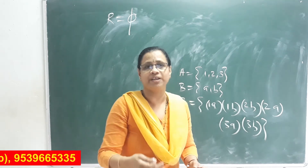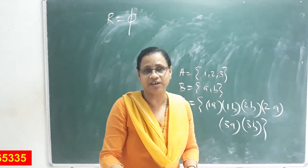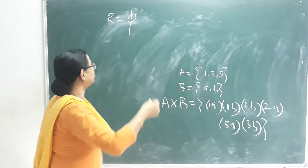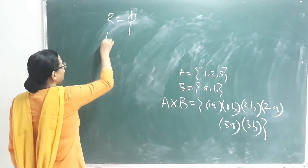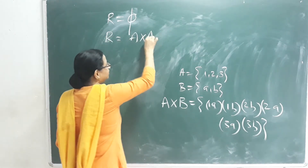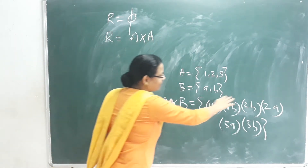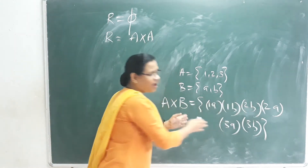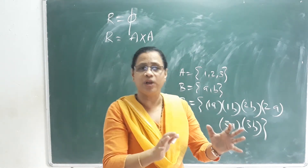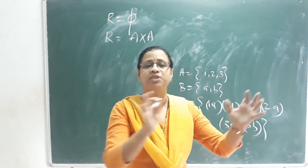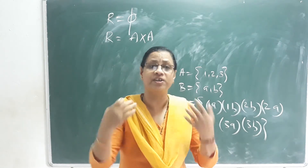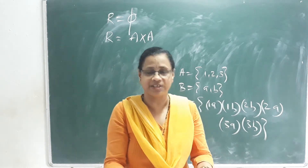The second type is the Universal Relation. If we call it a universal relation, it is equal to A cross A. All elements of the set are included. It is not just a subset — it contains everything, so we call it the universal relation.